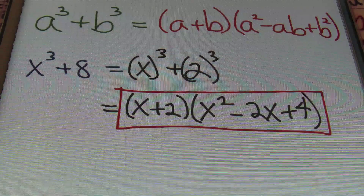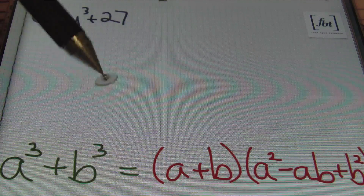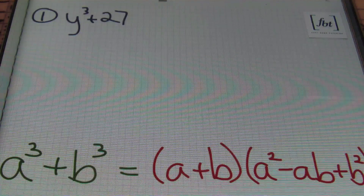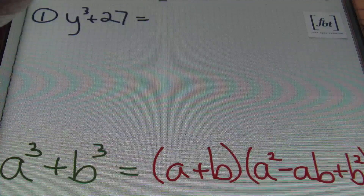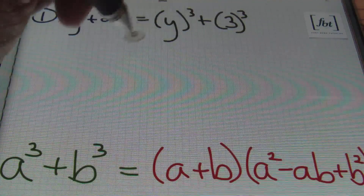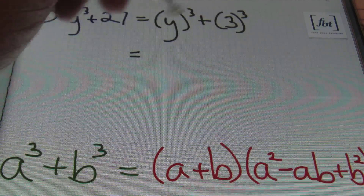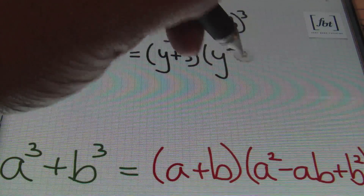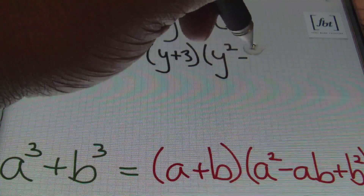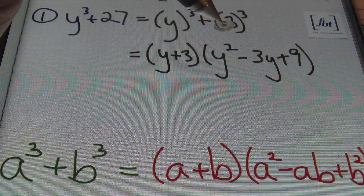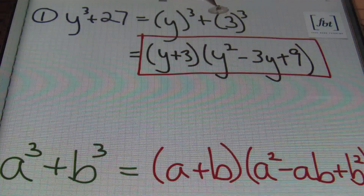Let's look at some real examples. Problem number one: y cubed plus 27. The first term being cubed is y, and the second term being cubed is 3, since 3³ = 27. Applying the formula, we get (y + 3)(y² − 3y + 9). Remember, your trinomial here will always be prime — you can't factor it. Done and done.